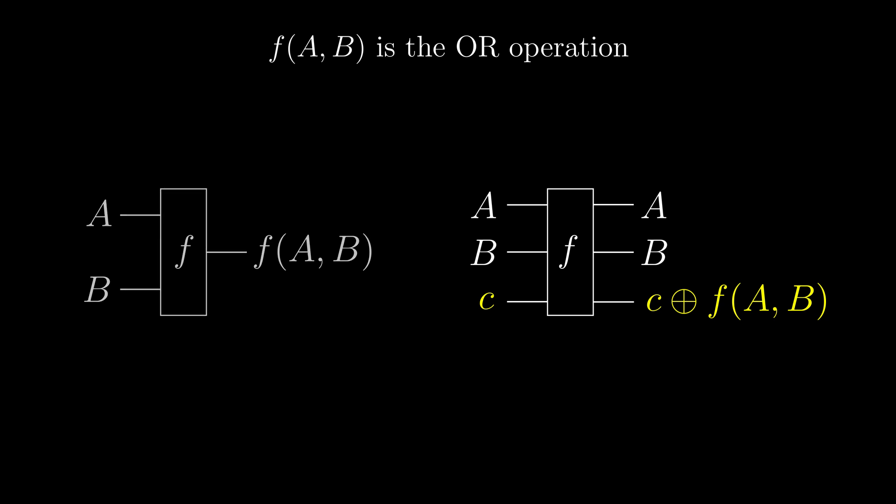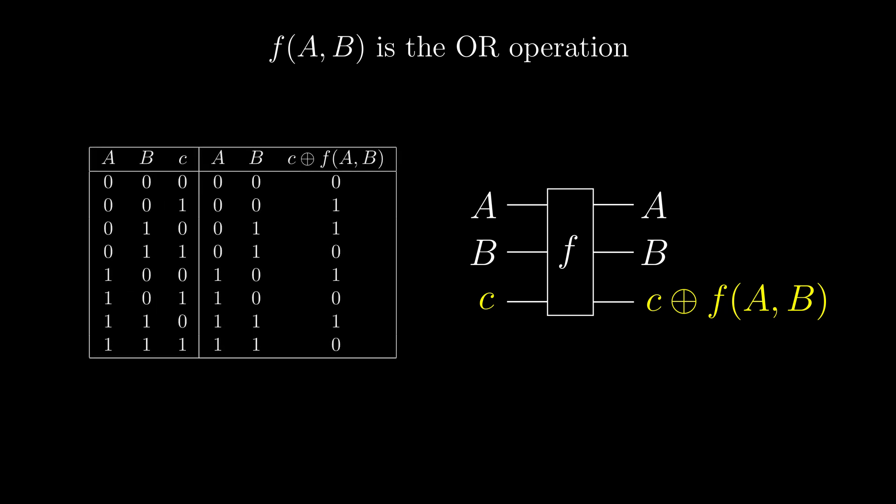Now looking at the truth table, each row of the outputs is unique, so the gate is reversible, since we can determine the input from the output.